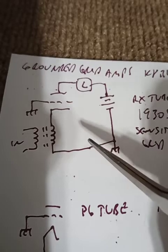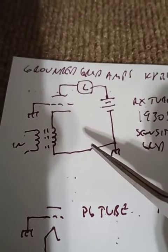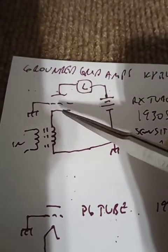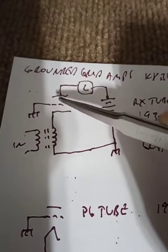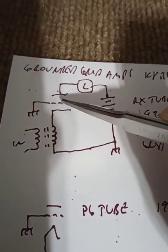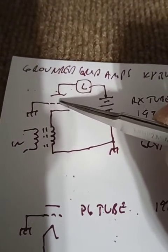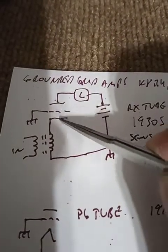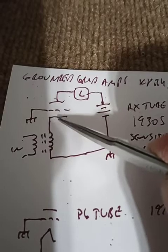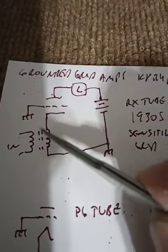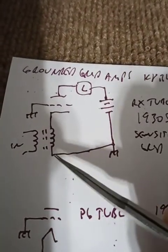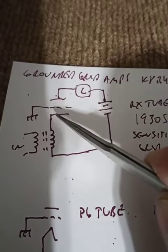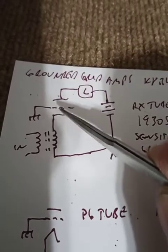There is no such thing as cathode drive or grid drive. It is impossible to drive one element. Control on the vacuum tube is an electrostatic field for these sensitive grid tubes, an electrostatic field from grid-to-cathode. It doesn't matter what the polarity is. It doesn't matter whether the grid is grounded or the cathode is grounded. The drive is from grid-to-cathode and always is.